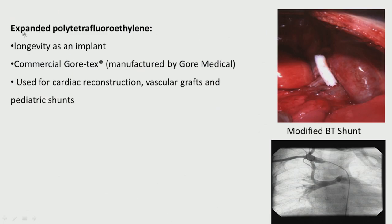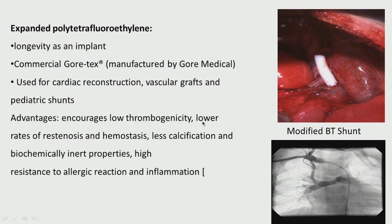ePTFE — expanded polytetrafluoroethylene — has very good longevity. There is a manufacturer called Gore-Tex. This is used as a shunt connecting different parts, especially the aorta, and is used for cardiac reconstruction, vascular grafts and pediatric shunts with a diameter of about 2 to 2.5 mm. Advantages include low thrombogenicity, lower rates of restenosis, hemostasis, less calcification, biochemical inertness, and resistance to allergic and inflammatory reactions.